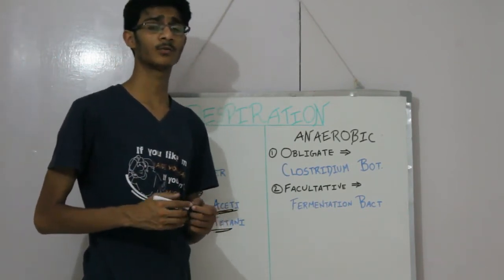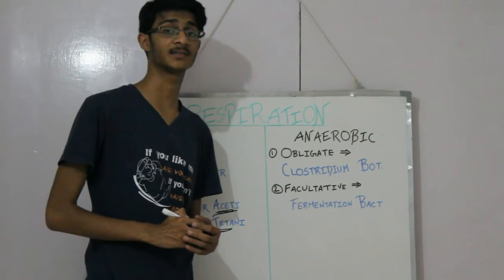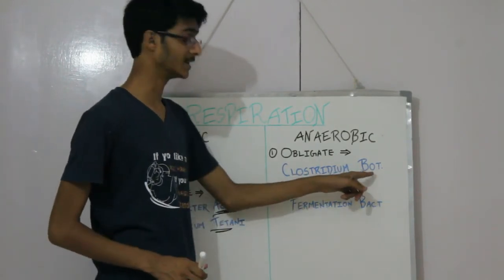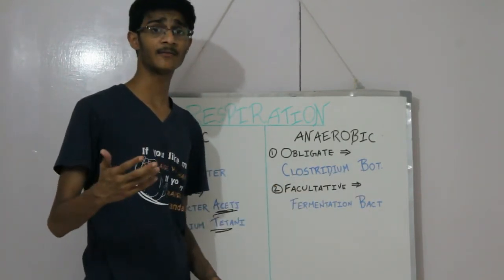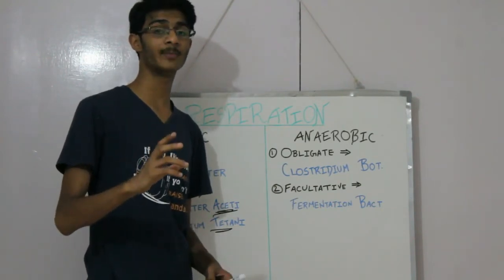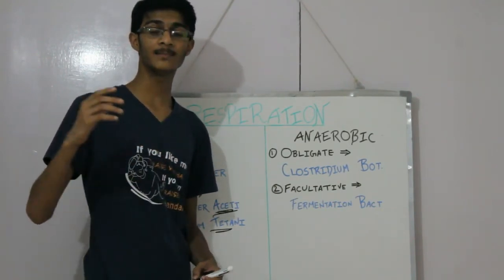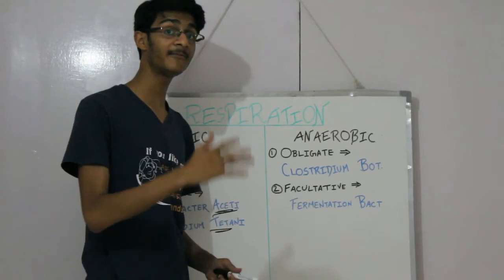Clostridium botulinum produces one of the world's most deadly toxins. The name botulinum - you can think of it as canned food. It lives only in bottled food. That is, this is anaerobic condition.